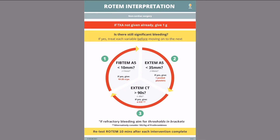So, firstly, where does our RotomAid fit in? Well, this cognitive aid is designed for hemostatic resuscitation in the bleeding adult patient who is not systemically anticoagulated with heparin. This could be trauma patients, bleeding non-cardiac surgery patients, and obstetric patients.